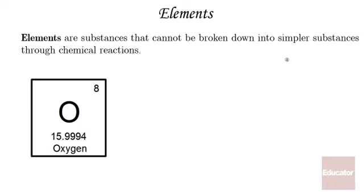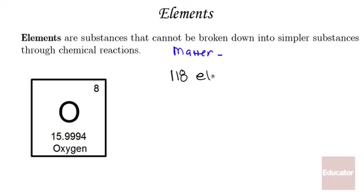Starting from the beginning with the discussion of elements. Elements are substances that cannot be broken down into simpler substances through chemical reactions. Matter is anything that takes up space, and elements are a form of matter. There are 118 elements on the periodic table. Here is shown one square, an example of an element from the periodic table, and this is oxygen. Of the 118 elements, 92 are naturally occurring.